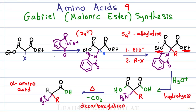Biological systems prefer to have L amino acids, but in this reaction, since the alpha carbon can attack the R group from the top or the bottom, we're going to get a racemic mixture of D and L amino acids.